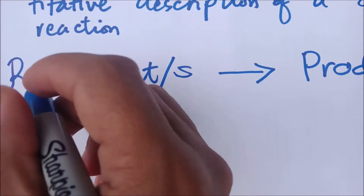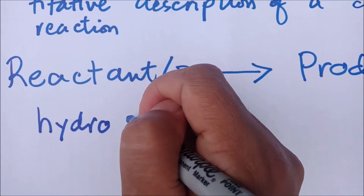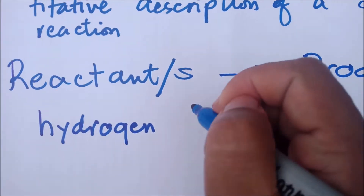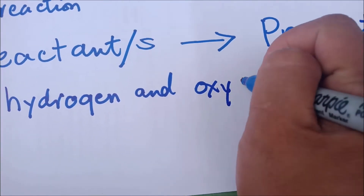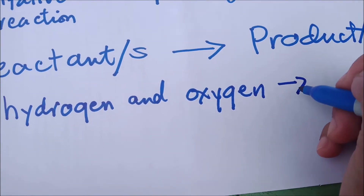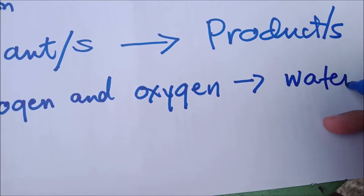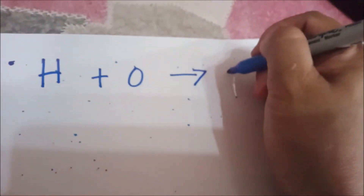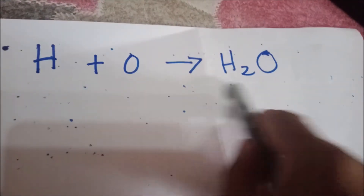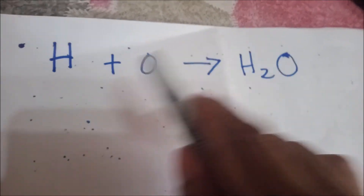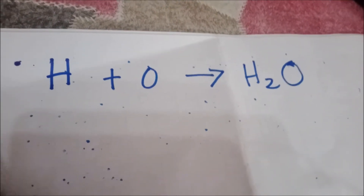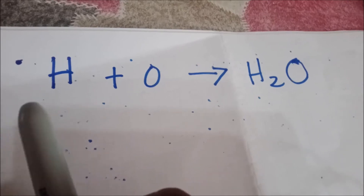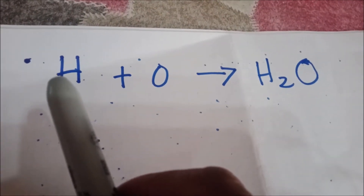Let's have an example. If hydrogen burns in the presence of oxygen, then your reactants are hydrogen and oxygen, which results in the production of water. We can write the chemical equation as H plus O equals H₂O. Now, this chemical equation needs to be balanced. We do this by evaluating the number of atoms of each substance on the reactant side and on the product side.